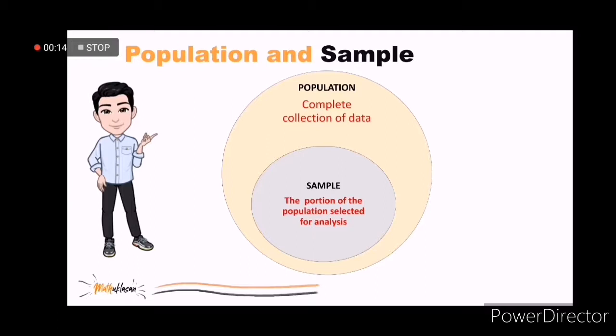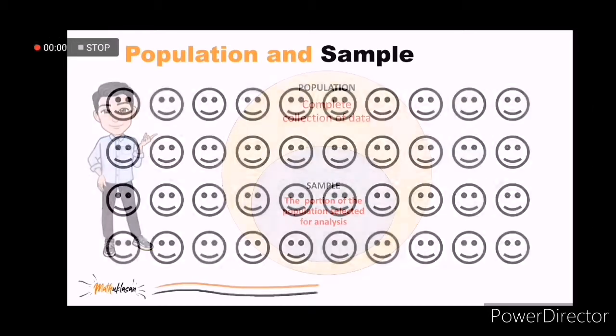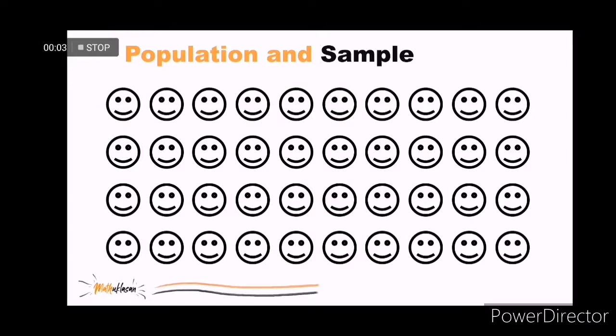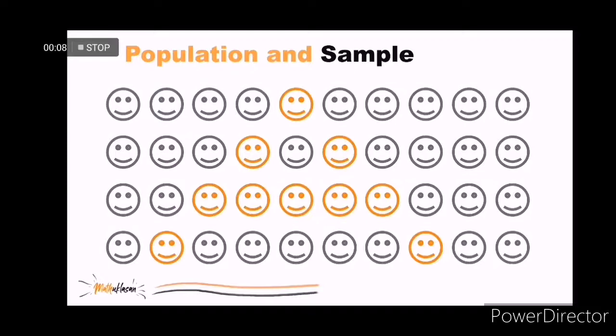A population consists of all the items or individuals about which you want to reach conclusions, while a sample is the portion of a population selected for analysis. If each of these heads represent the population, then these selected colored heads are your sample.